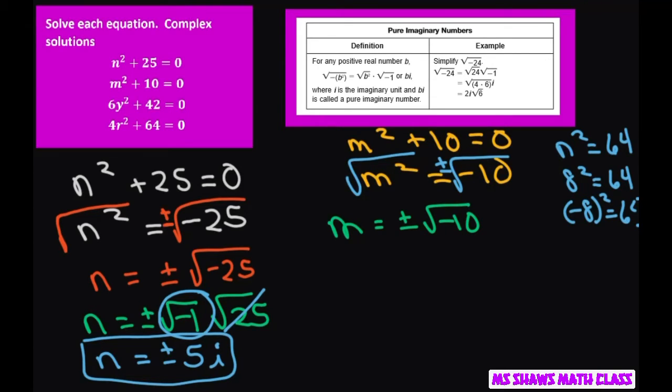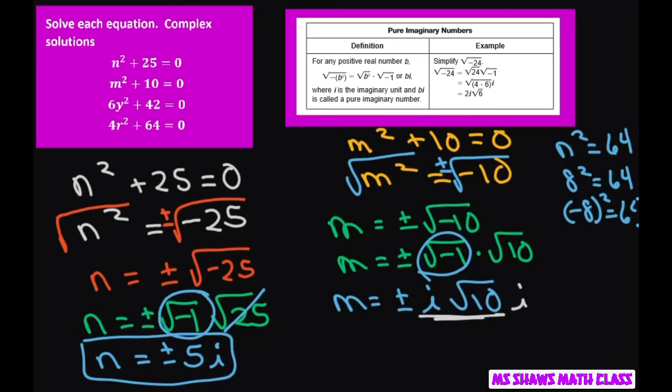This can be written as m equals plus or minus square root of negative 1 times square root of 10. That means m equals plus or minus i square root of 10. You always want to put i in front of the radical. Don't want to put it at the end because sometimes it looks like it's under the radical, especially when we're trying to write real fast sometimes.